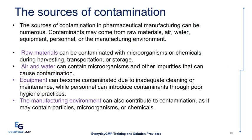The sources of contamination in pharmaceutical manufacturing can be numerous. Contaminants may come from raw materials, air, water, equipment, personnel, or the manufacturing environment. Raw materials can be contaminated with microorganisms or chemicals during harvesting, transportation, or storage. Air and water can contain microorganisms and other impurities that can cause contamination. Equipment can become contaminated due to inadequate cleaning or maintenance, while personnel can introduce contaminants through poor hygiene practices. The manufacturing environment can also contribute to contamination, as it may contain particles, microorganisms, or chemicals.